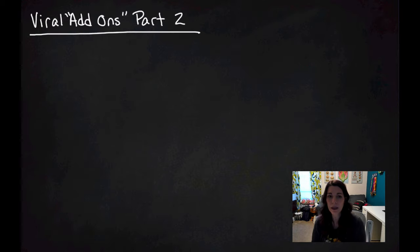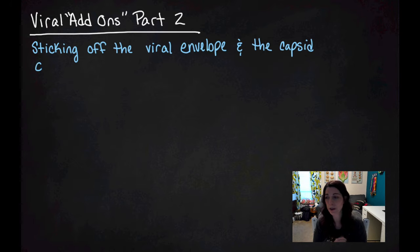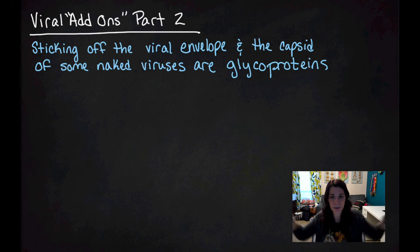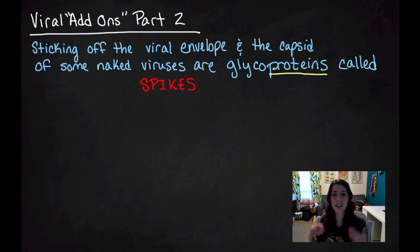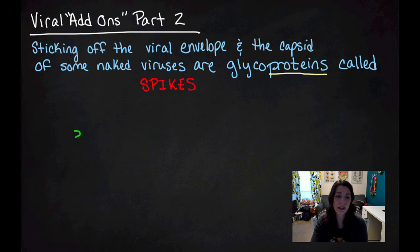The other viral add-on that we need to talk about is the little sticking-off thingy. Sometimes when you see viral pictures like the coronavirus, you see that it has little spikes sticking off of it. The things that are sticking off of the viral envelope, and sometimes off of a capsid of a naked virus, are glycoproteins. And those glycoproteins are called spikes.